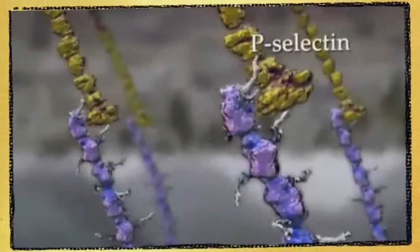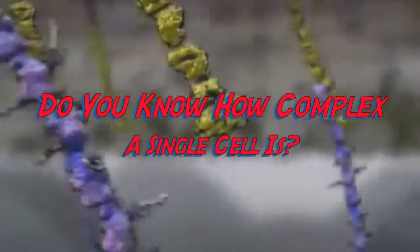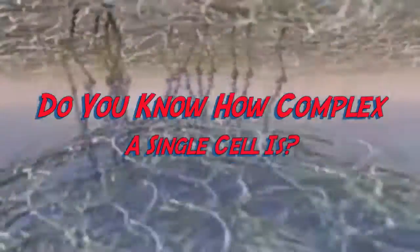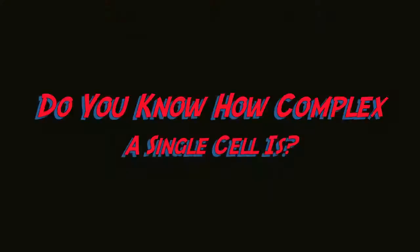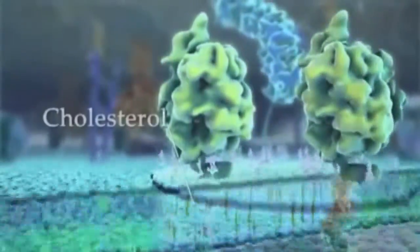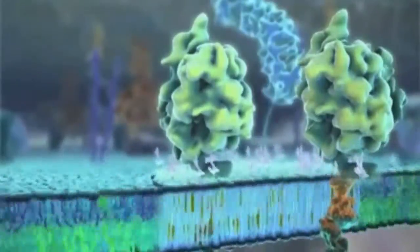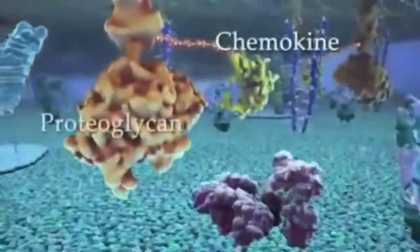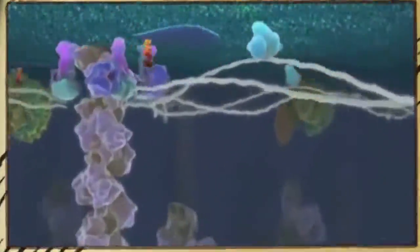It wasn't until 1839 that cell theory was first described by Fyodor Schwann in basically its modern form. By 1858, researcher Rudolf Virchow had learned enough about the cell to conclude that every cell must come from a pre-existing cell.